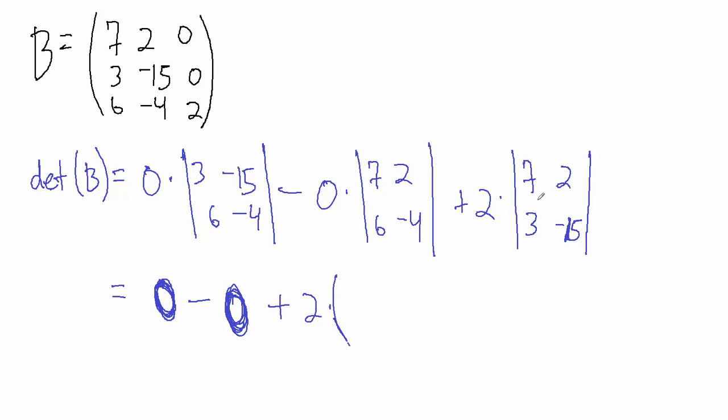So if we want to find this determinant, we're gonna do top left times bottom right minus bottom left times top right. So top left is 7, bottom right is negative 15, so this is 7 times negative 15, and then minus 3 times 2. Okay so 0 minus 0 is just 0. Then we have plus 2 times what? Well 7 times 15 is 105 and we have a minus sign here, so this is actually minus 105, and then minus 3 times 2, which is minus 6.